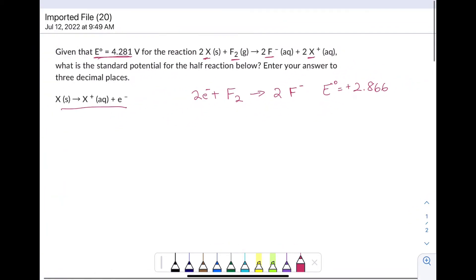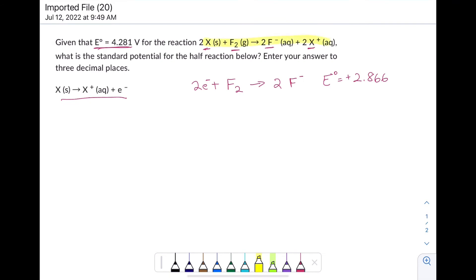Overall, this reaction has a standard cell potential of positive 4.281 volts. So the other half reaction, the half reaction in terms of X, must contribute the rest of that.